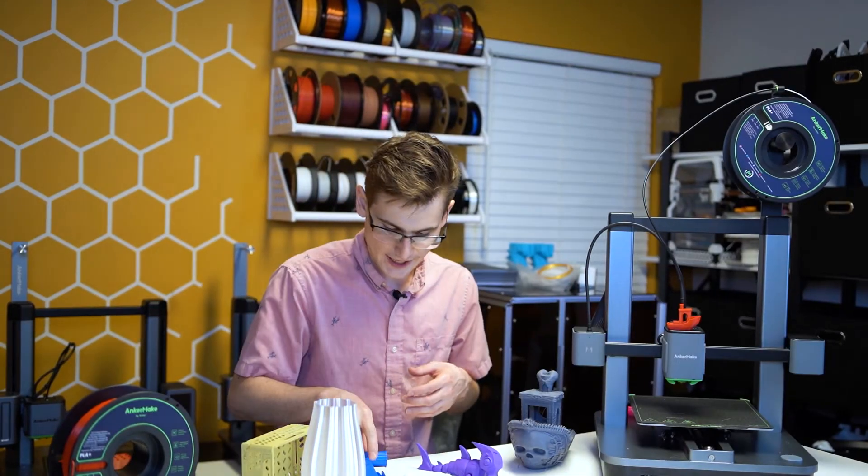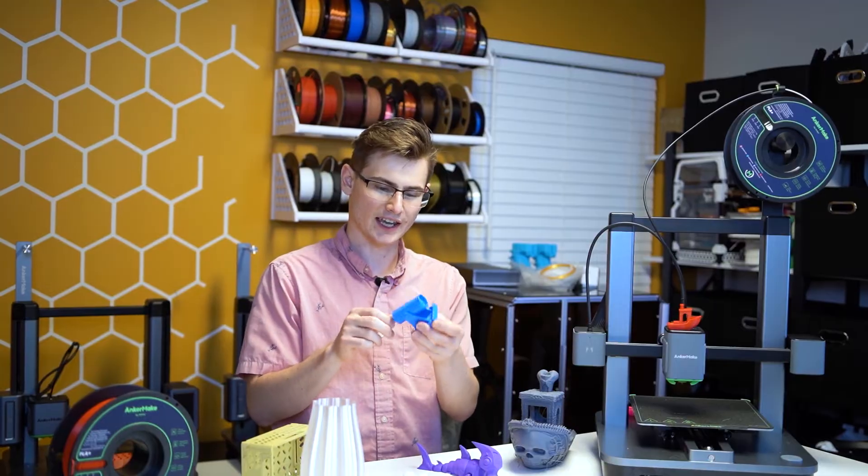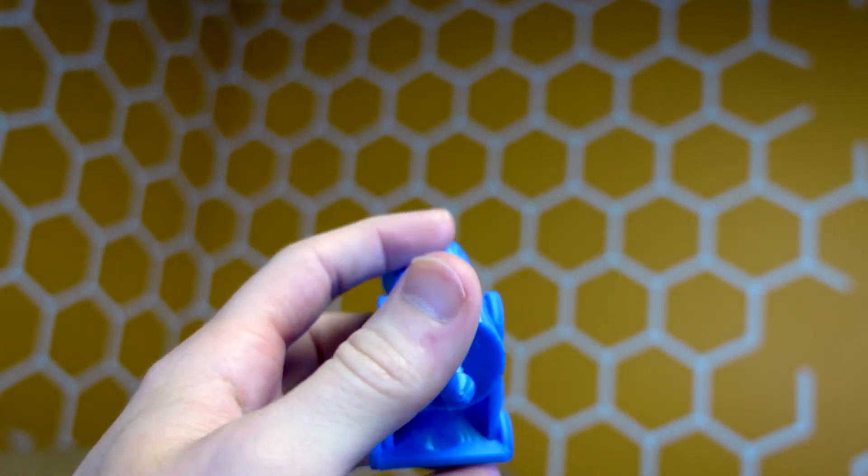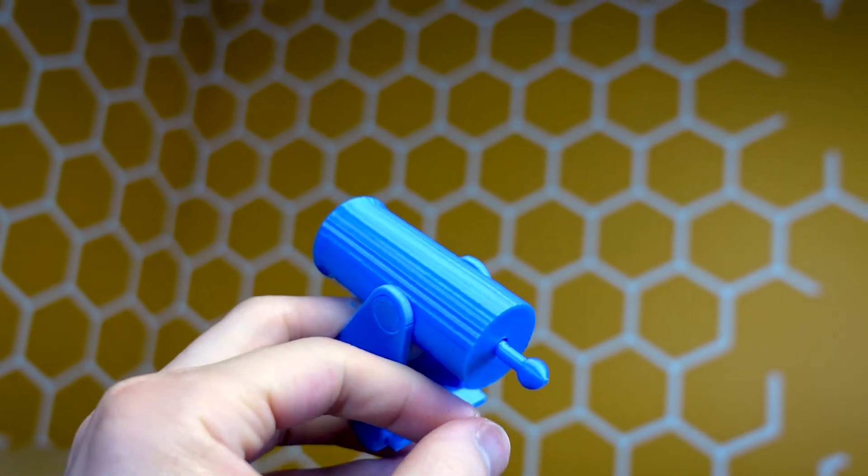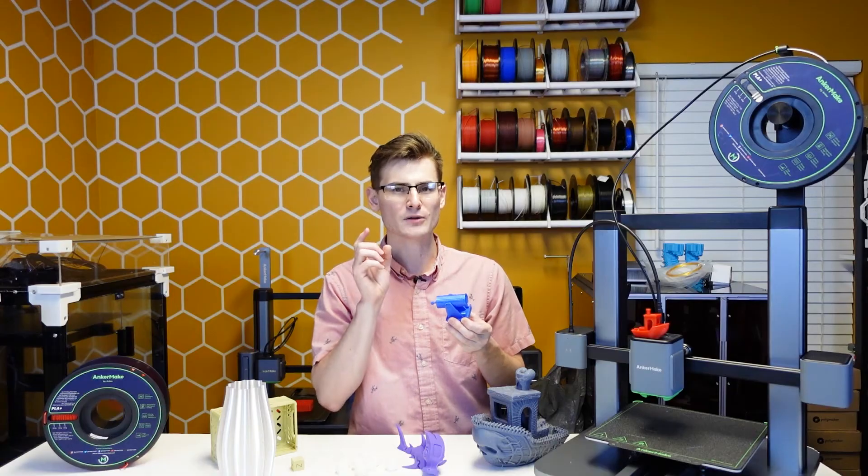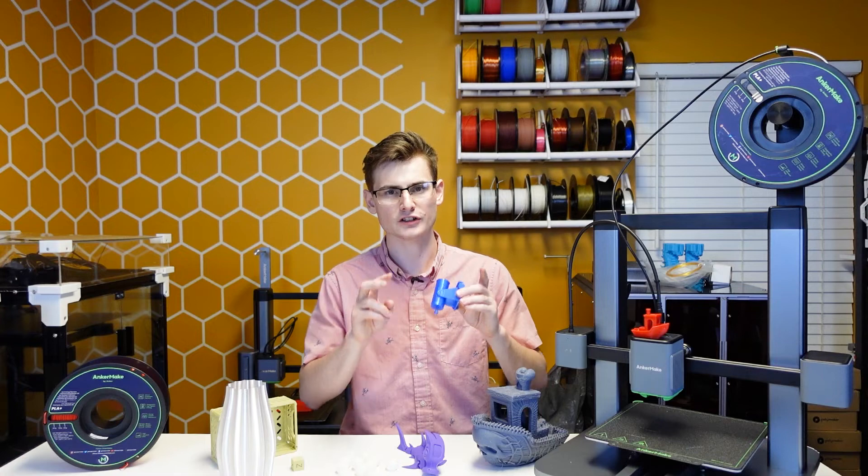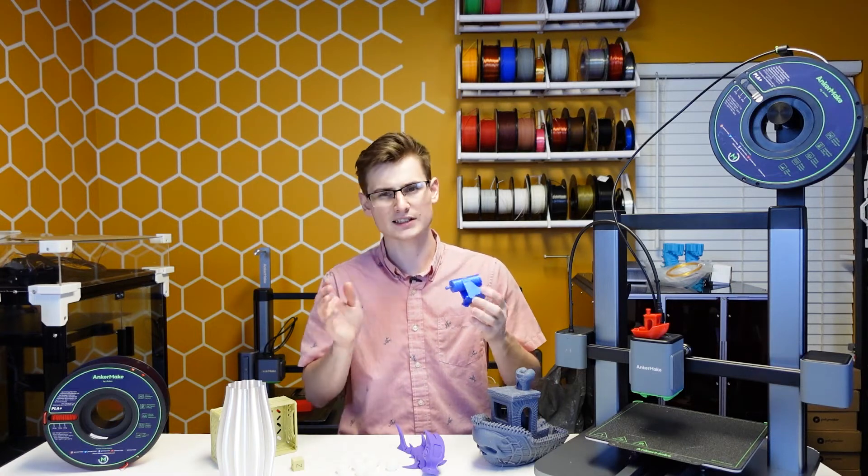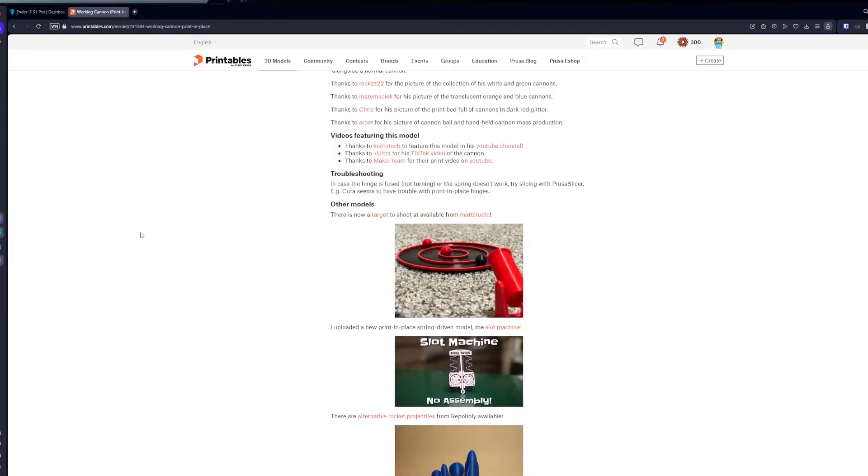One model I'm particularly happy about is this print-in-place Canon. This Canon actually also has a compliant hinge on the side, which is completely fused together. But I don't actually think that's AnkerMake's fault specifically.